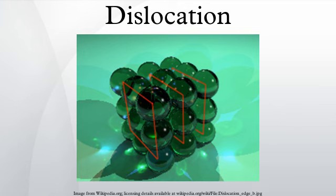Dislocations can move if the atoms from one of the surrounding planes break their bonds and rebond with the atoms at the terminating edge. In effect, a half-plane of atoms is moved in response to shear stress by breaking and reforming a line of bonds, one at a time. The energy required to break a single bond is far less than that required to break all the bonds on an entire plane of atoms at once. Even this simple model of the force required to move a dislocation shows that plasticity is possible at much lower stresses than in a perfect crystal.